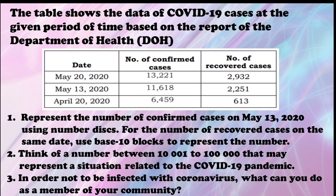For your reflection, study the table that shows the data of COVID-19 cases at a given period of time based on the report of the Department of Health, then do the following: Activity 1 — represent the number of confirmed cases on May 13, 2020 using number disks; for the number of recovered cases on the same date, use base-10 blocks to represent the number. Activity 2 — think of a number between 10,001 and 100,000 that may represent a situation related to the COVID-19 pandemic. Activity 3 — in order not to be infected with coronavirus, what can you do as a member of your community?